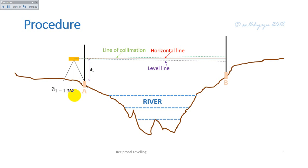a1 equals 1.368 meters. Then the reading on staff B is marked as b1, and b1 equals 0.388 meters. The distance between the horizontal line and level line is the error. Therefore, correct reading on staff...